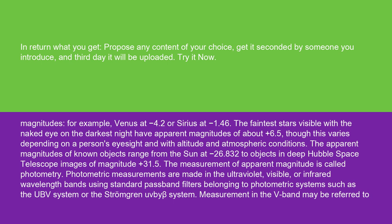For example, Venus at -4.2 or Sirius at -1.46. The faintest stars visible with the naked eye on the darkest night have apparent magnitudes of about +6.5, though this varies depending on a person's eyesight and with altitude and atmospheric conditions. The apparent magnitudes of known objects range from the sun at -26.832 to objects in deep Hubble Space Telescope images of magnitude +31.5.